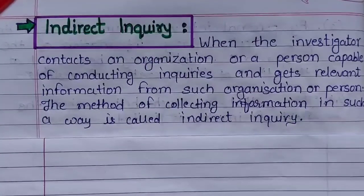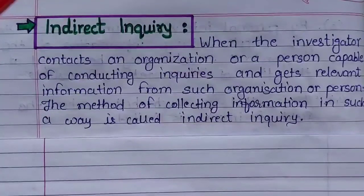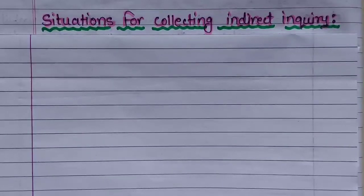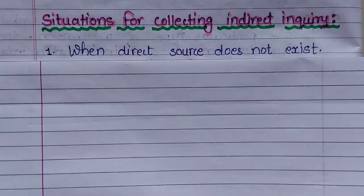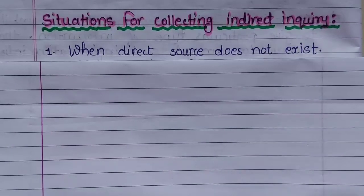Now, the situations for using indirect inquiry — that is, in which situations we need to use indirect inquiry. The first situation: when the direct source does not exist, meaning when it is not possible to obtain information directly from the source, then the indirect method is used.